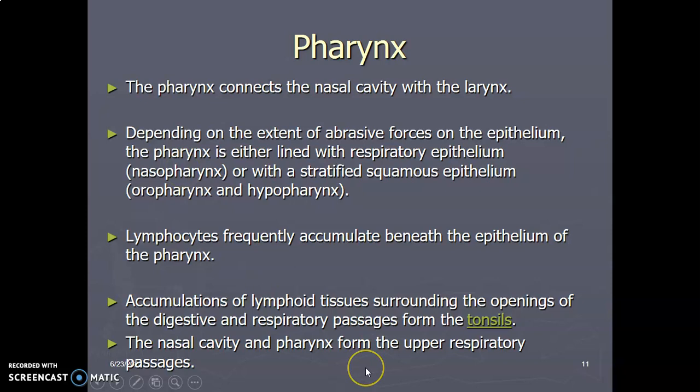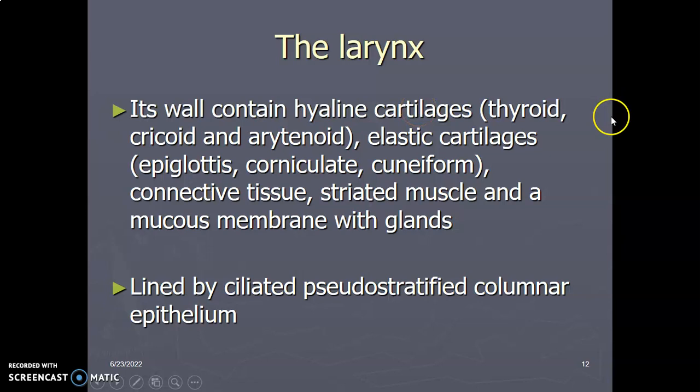The nasal cavity and pharynx form the upper respiratory passages. The larynx contains hyaline cartilage in the thyroid, cricoid, and arytenoid cartilages, while the epiglottis, corniculate, and cuneiform are elastic cartilages. The wall of the larynx also has connective tissue and skeletal muscle. So the lining is a mucous membrane, the wall is made up of striated skeletal muscle, connective tissue, and two types of cartilages — hyaline and elastic — as specifically indicated.